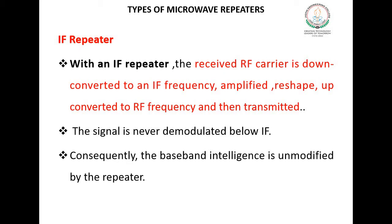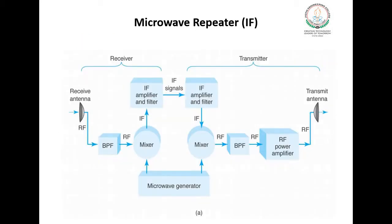The first type is the intermediate frequency microwave repeater. With an IF repeater, the received RF carrier is downconverted to an intermediate frequency. It is then amplified, reshaped, and upconverted back to RF frequency and transmitted. The signal is never demodulated below IF. Consequently, the baseband intelligence is unmodified by the repeater. In the block diagram, the received antenna receives the RF signal, downconverts it to IF, amplifies and reshapes it, then upconverts it and feeds it to the transmit antenna.